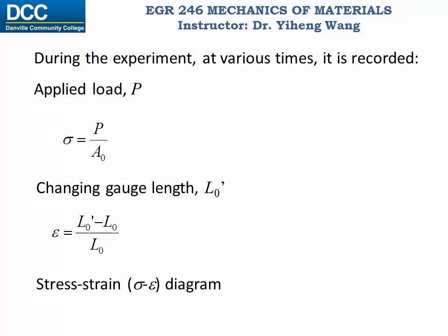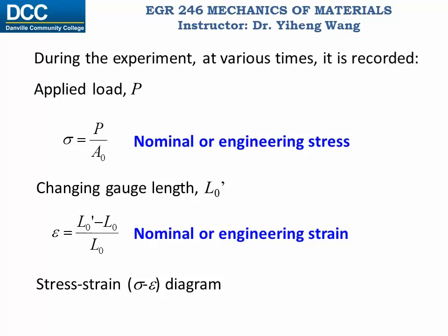If you pay attention, you will realize that over time both the cross-sectional area and the gauge length are continuously changing, so these two equations cannot really give us the true stress and strain at a given time. The stress calculated by assuming a constant cross-sectional area is called nominal or engineering stress, and the strain calculated this way is called nominal or engineering strain, producing what is called a conventional stress-strain diagram. A true stress-strain diagram can also be constructed by correcting for the changes in cross-sectional area and gauge length.